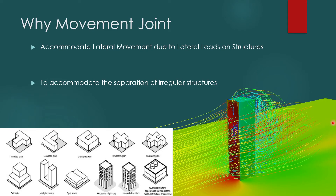Why do we need a Movement Joint? We need to accommodate the lateral movements due to lateral loads in the structures. When lateral loads like wind or earthquake loads apply on a structure, these structures will move. When there are two structures close by, each structure should have the freedom to move freely. If one structure hits another, there will be damage, so an adequate gap should be maintained. This gap depends on the design requirement.